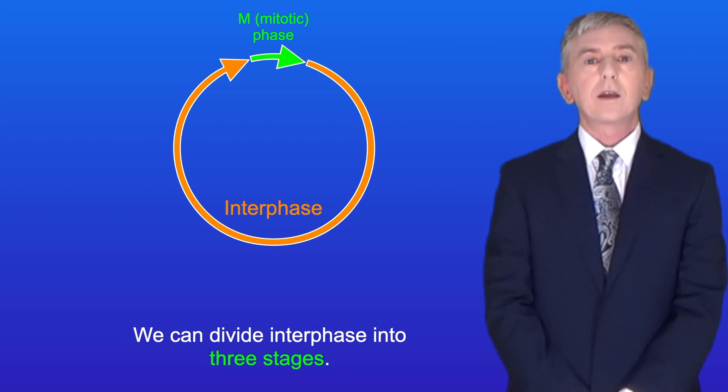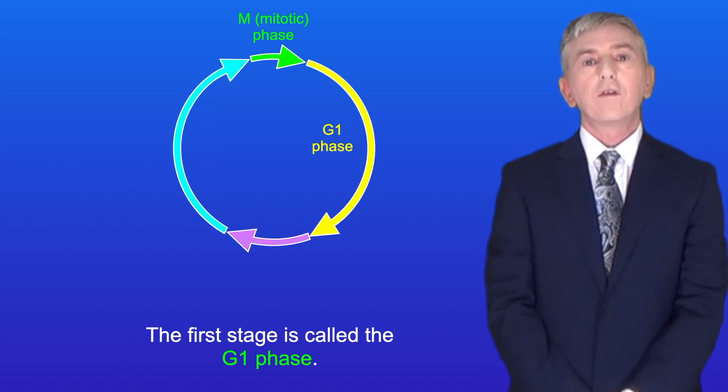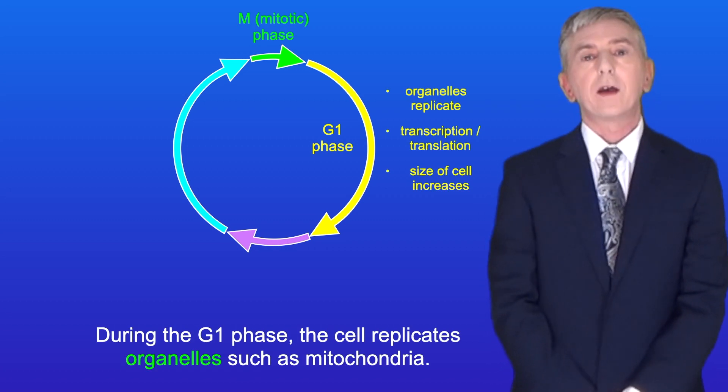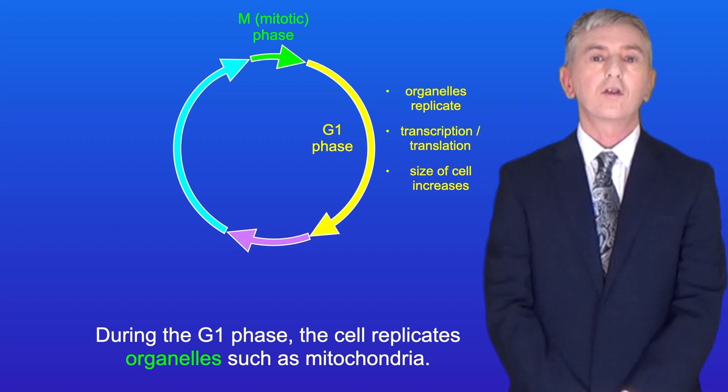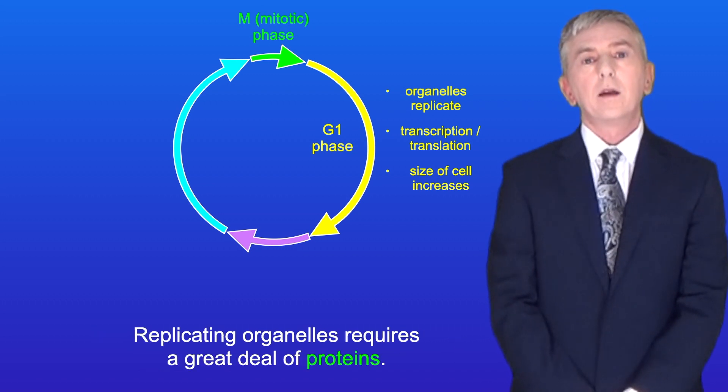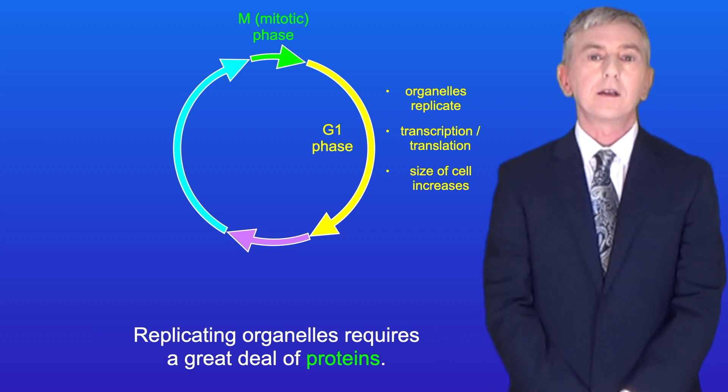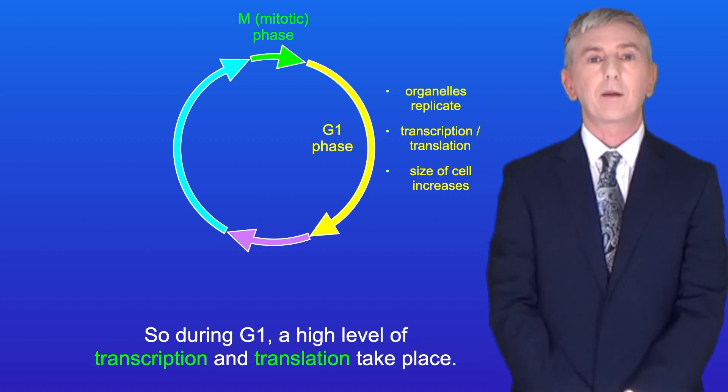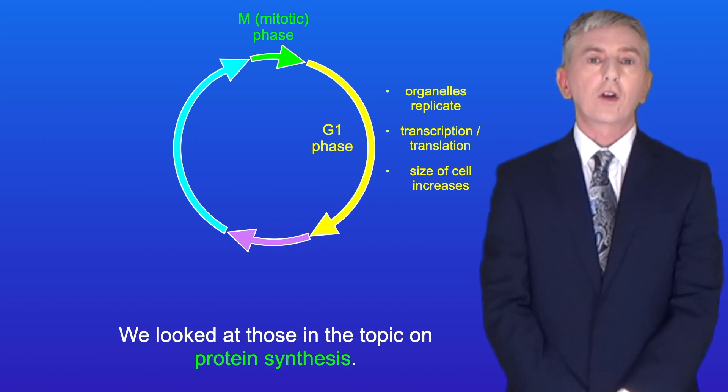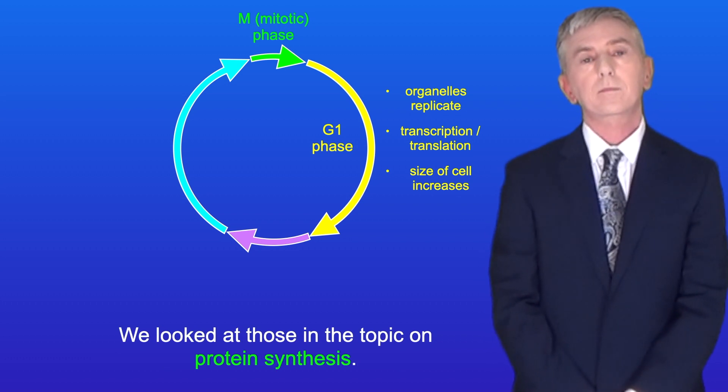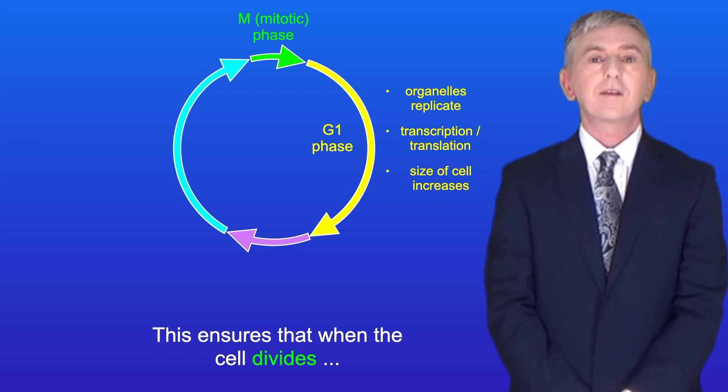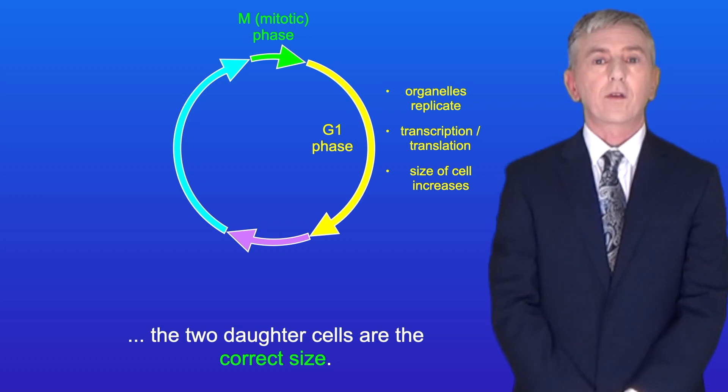We can divide interphase into three stages. The first stage is called the G1 phase. During the G1 phase the cell replicates organelles such as mitochondria. Replicating organelles requires a great deal of proteins, so during G1 a high level of transcription and translation take place. During the G1 phase the size of the cell also increases. This ensures that when the cell divides the two daughter cells are the correct size.